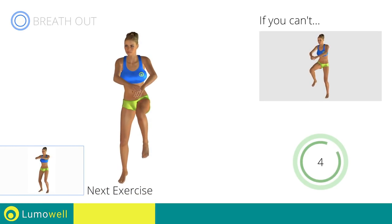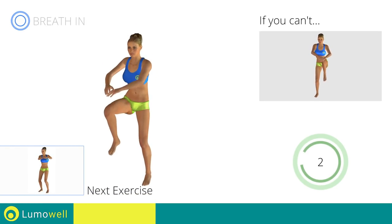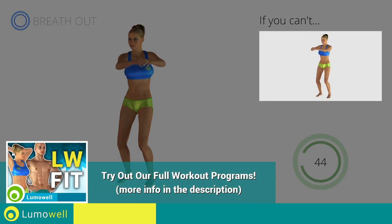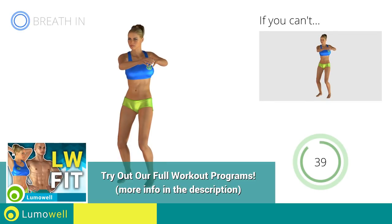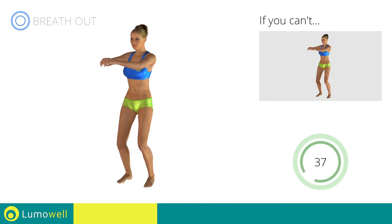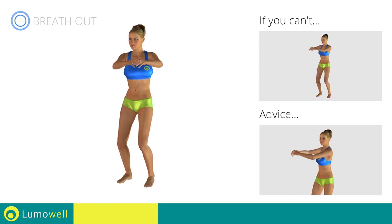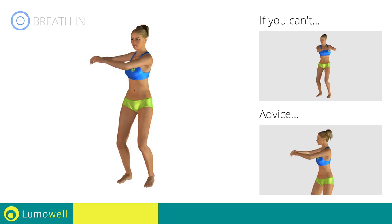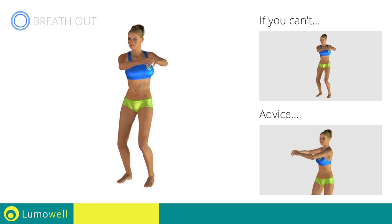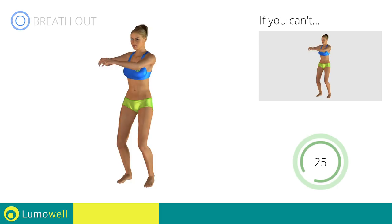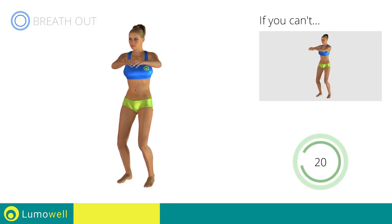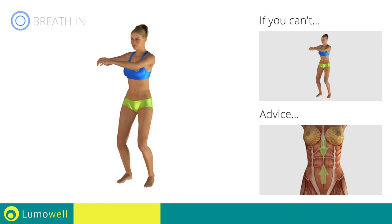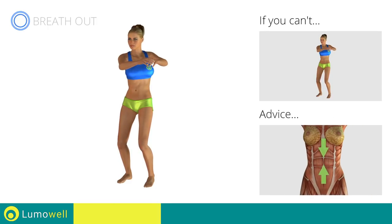Next exercise: standing twist. Go! If you are unable to complete this movement, try slowing down the pace. Be sure to only rotate your torso — it may help to stare at a point in front of you. Keep your abs constantly tight to avoid burdening the spine.